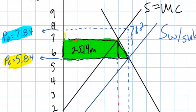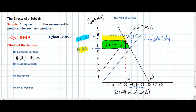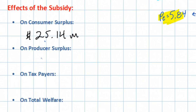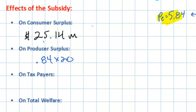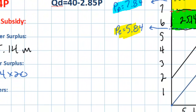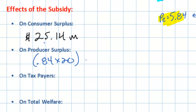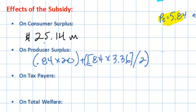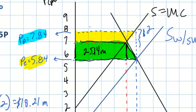Producers also enjoy an increase in surplus, represented by the yellow shape — a rectangle with a triangle attached. We calculate the rectangle as (7.84 - 7) × 20 million = 0.84 × 20, and the triangle as 0.5 × 0.84 × 3.36. The increase in producer surplus represented by the yellow area equals $18.21 million.